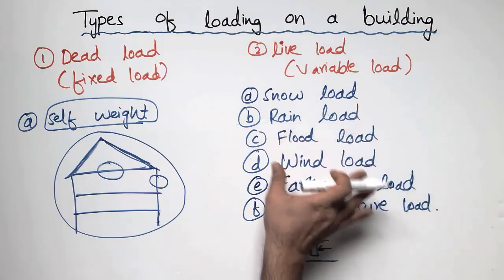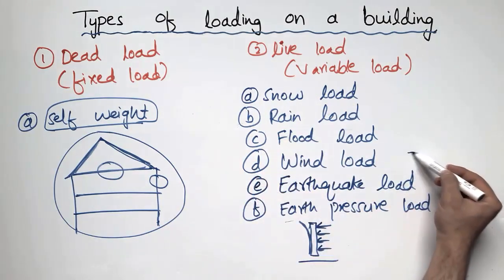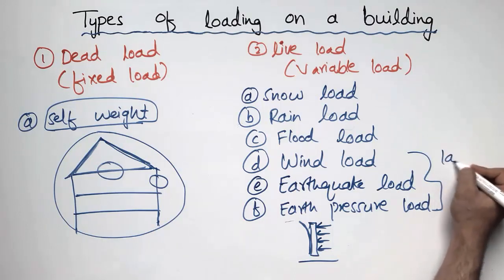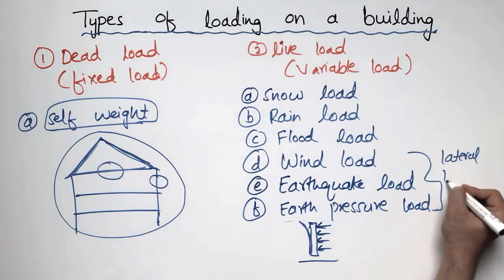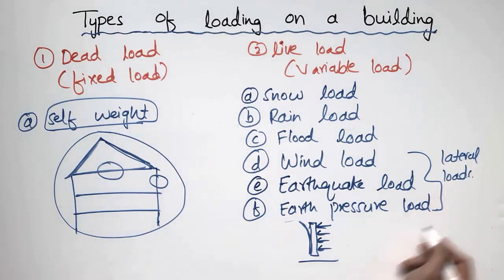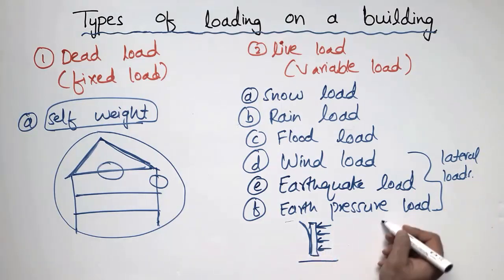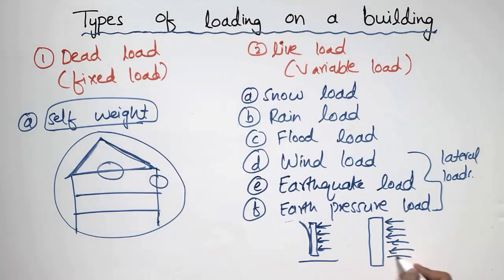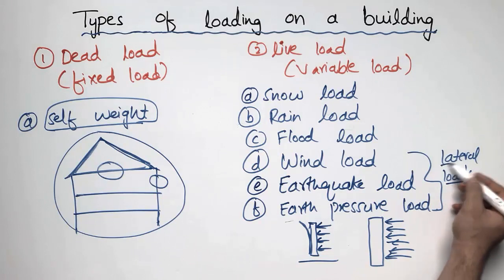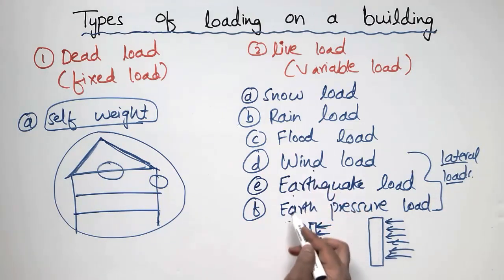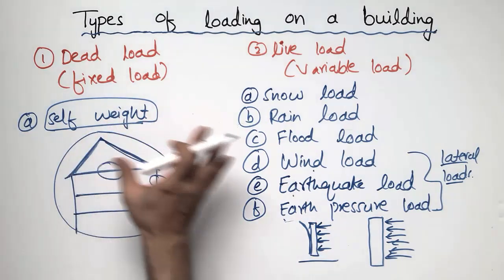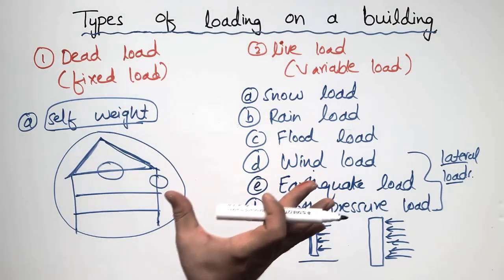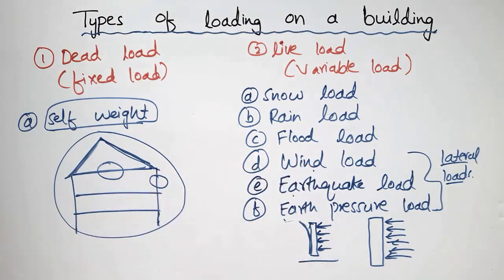These are the different subtypes of the live load. Among them, wind load, earthquake load, and earth pressure load are called lateral loads because they always act on the sideways of a building. These loads act on the side of a structure or column. The wind load, earthquake load, and earth pressure load are the three lateral loads. These are the important loadings which we always consider while designing a structure.